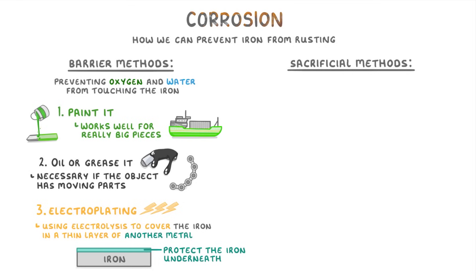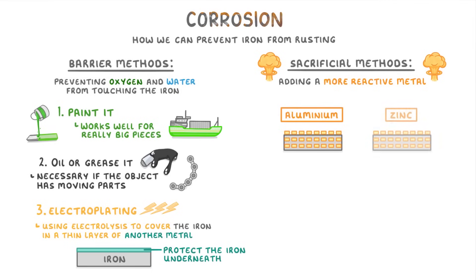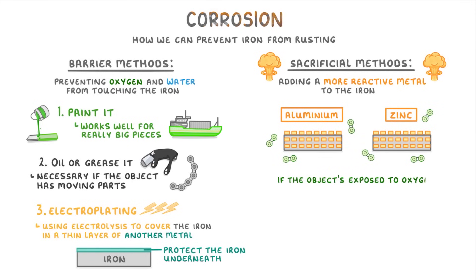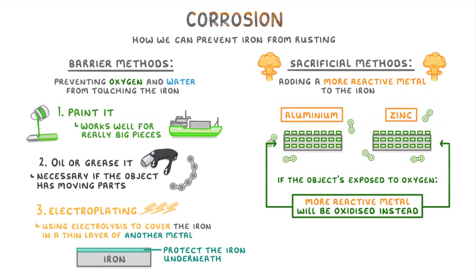The other option is called the sacrificial method. This involves adding a more reactive metal, like aluminium or zinc, to the iron. This means that if the object gets exposed to oxygen, the more reactive metal will be oxidized instead of the iron, and so the iron won't rust.